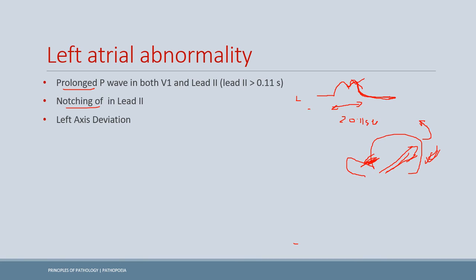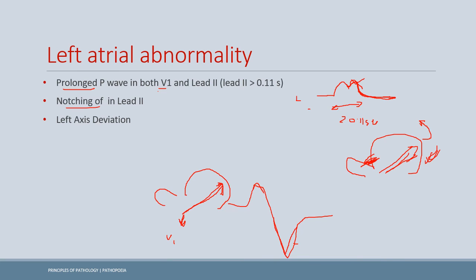In V1, there is a longer negative deflection in left atrial abnormality. Because of left atrial enlargement, the dipole moment increases and the depolarization vector moves opposite to V1, creating a greater negative potential in the V1 ECG tracing.